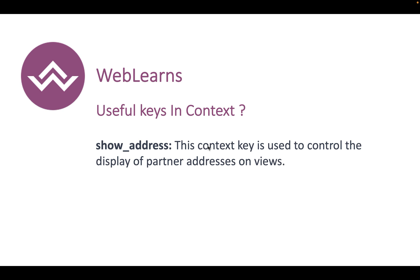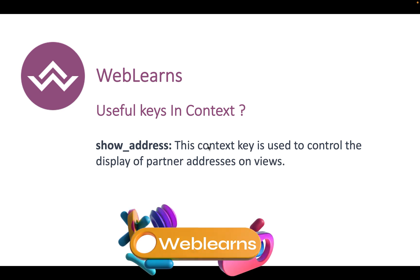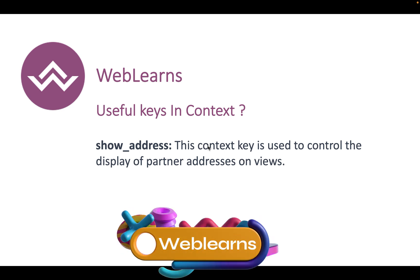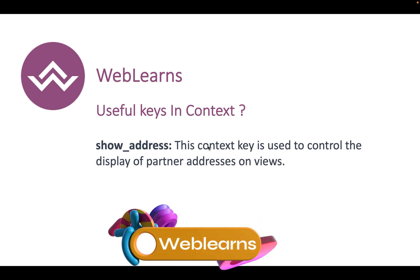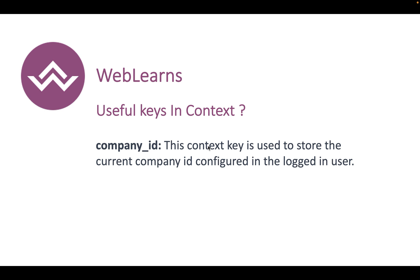If you want to get the current user's record ID, you can use uid. Also, in the res.partner model, if you want to display a partner's address parts — street, street2, city, zip code, state, and country — in an organized way, you can pass show_address, and it will automatically populate that specific view.